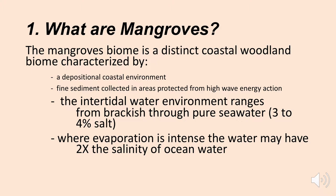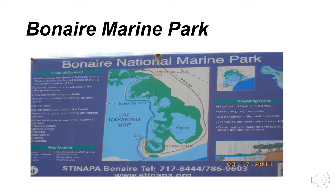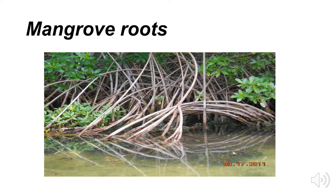Bonaire National Marine Park is famous for scuba diving, and Bonaire has done a very good job protecting its mangrove forests. A characteristic of mangrove trees is that they have massive, extensive root systems that anchor the plants into water-laden mud. These roots create quite a nice habitat for many organisms, and because of that mangroves are one of the most biologically diverse biomes on the planet.